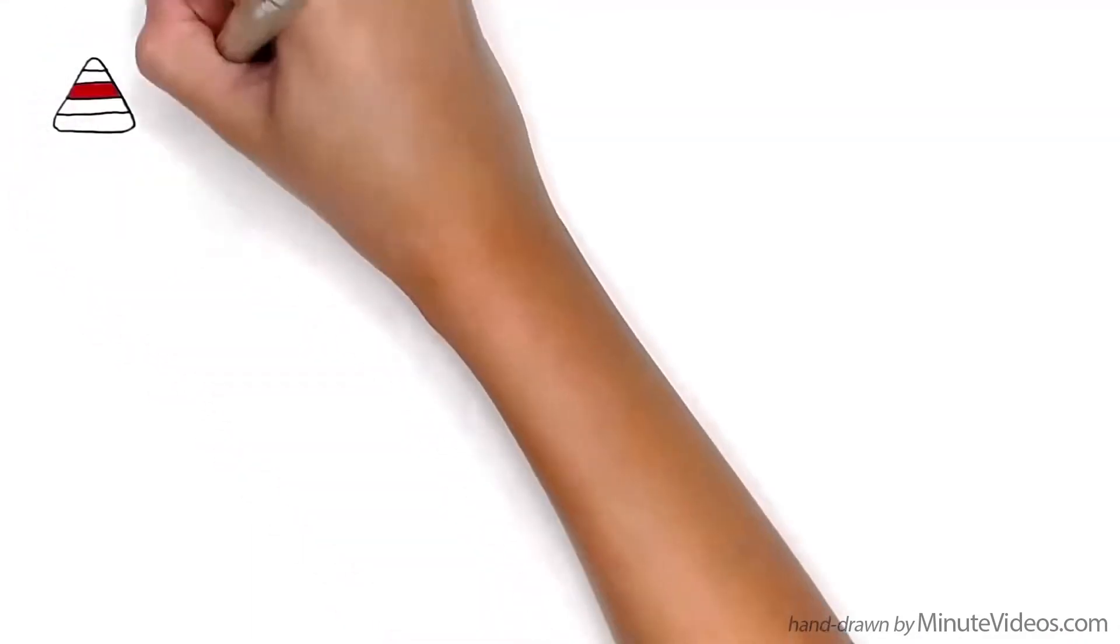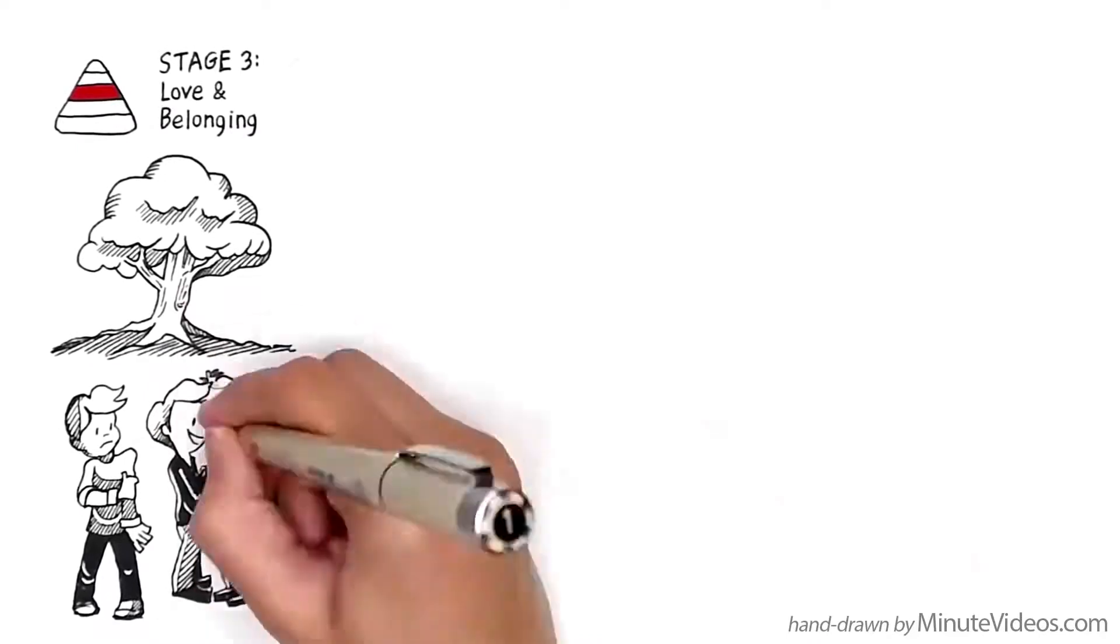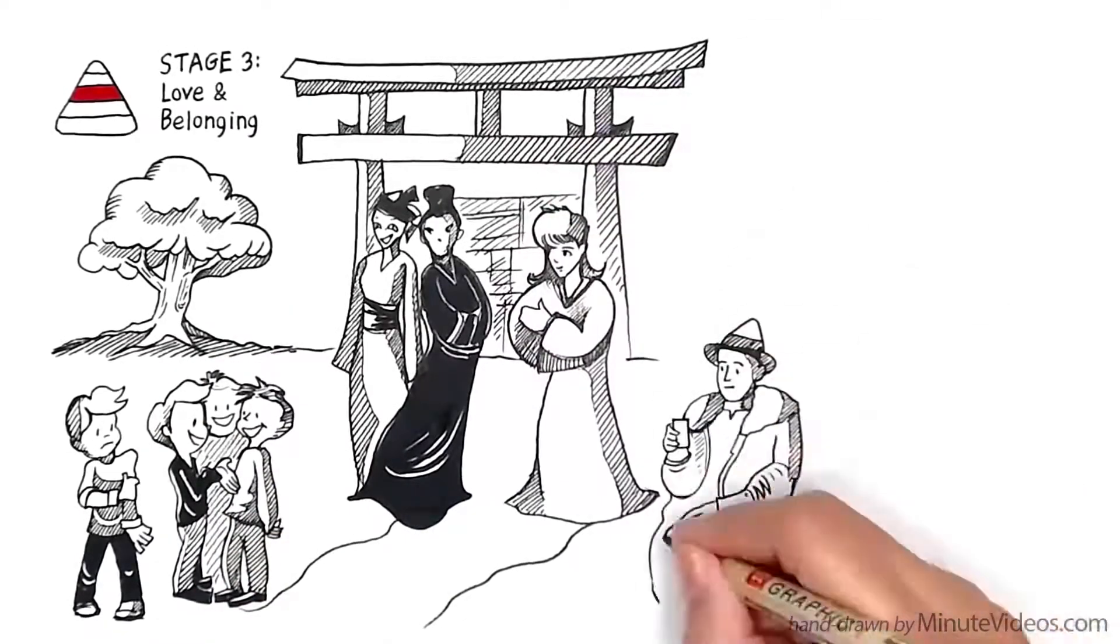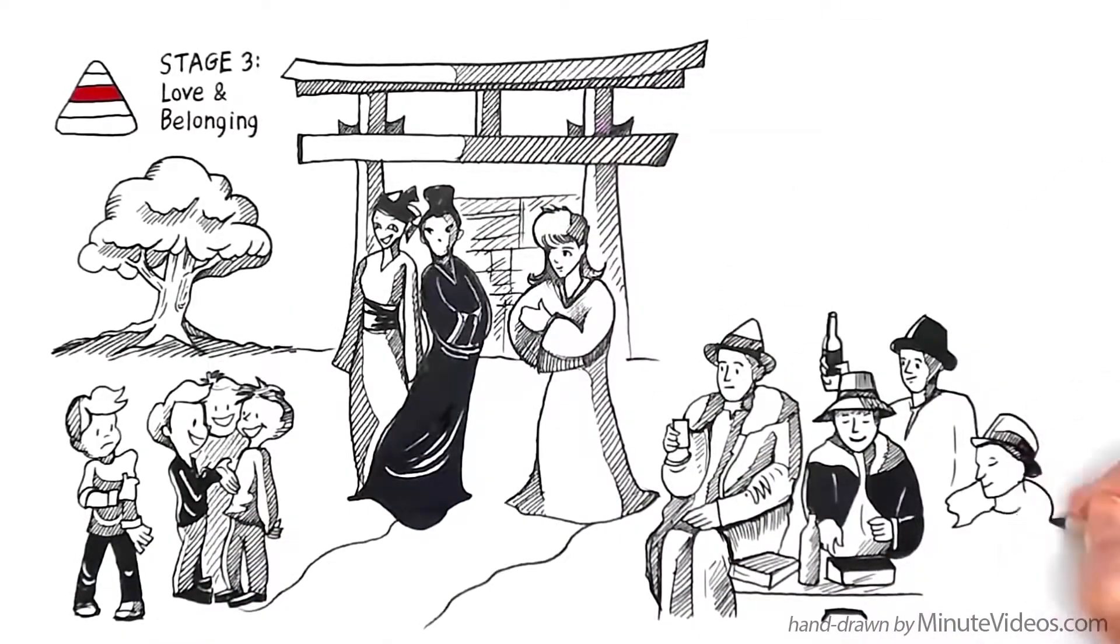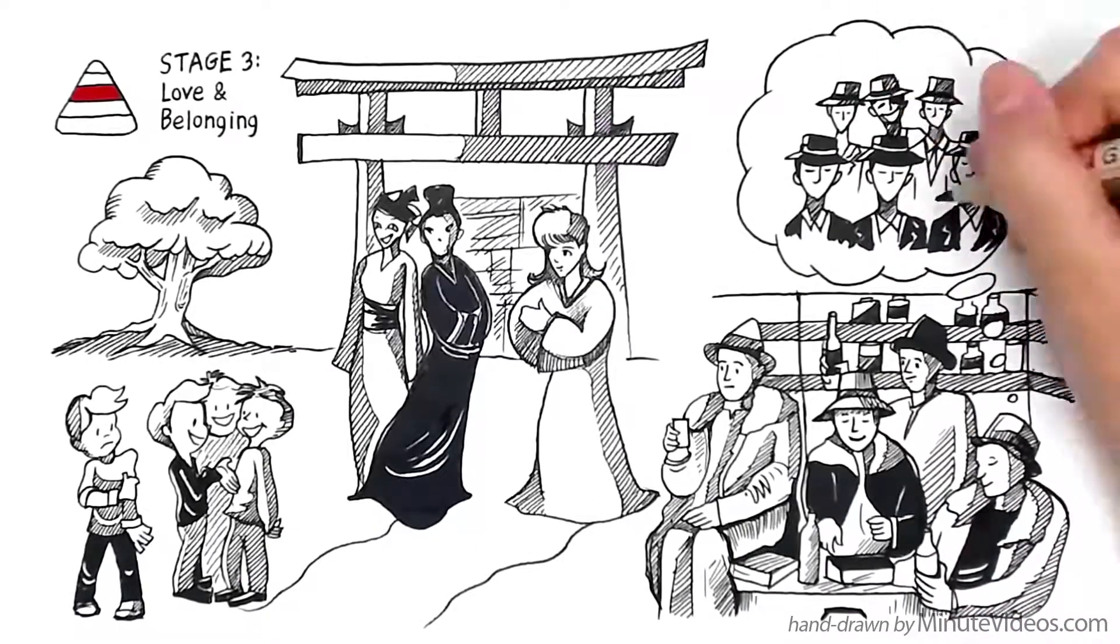At Stage 3, we seek love and belonging. We desire to be close to family and friends, belong to a society or join a gang. But the moment we feel completely part of a group, we already wish to be a little different than the rest.